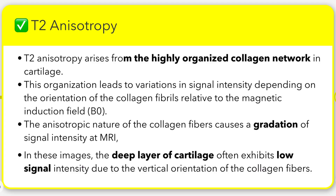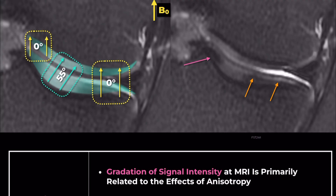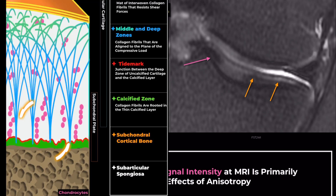When we're looking at T2-weighted sequences, pay close attention to the deeper layers of cartilage. You'll often notice they appear dark or low signal. This isn't pathology — it's due to the vertical orientation of those collagen fibers.